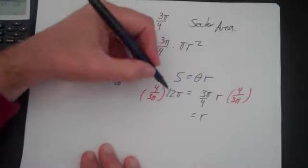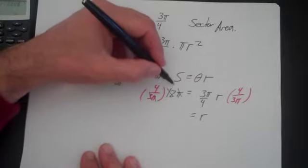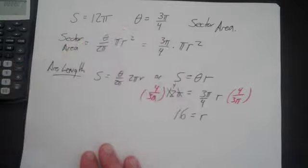R in that case would be, the pi's will cancel, the 12 and the 3 cancel. That becomes a 4. R is 16.